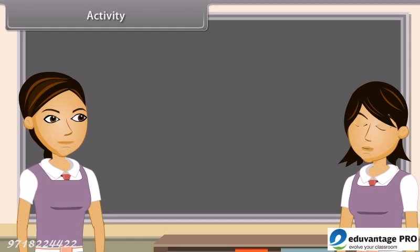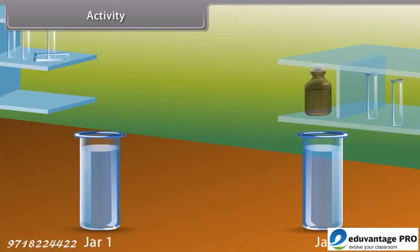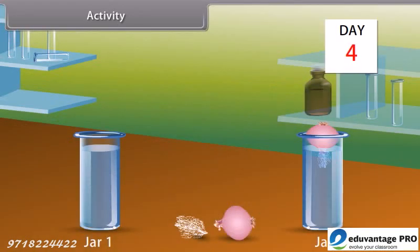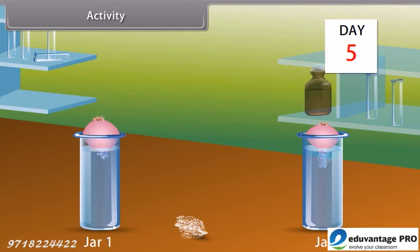We can prove that meristematic tissues are found in specific regions by doing an activity. Take a glass jar filled with water, then place a same-sized onion bulb on each jar for three days to observe the growth of roots. Measure the length of roots on days 1, 2, and 3. On the fourth day, cut the roots of the onion bulb, then place it back on the jar. On the fifth day, we find that the growth of roots has stopped. This activity proves that growth of plants occurs only in certain specific regions, because the dividing tissue — also known as meristematic tissue — is located only at these points.